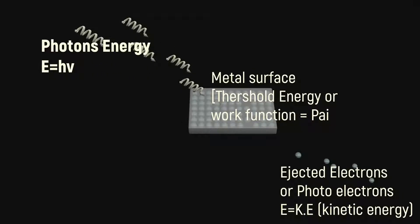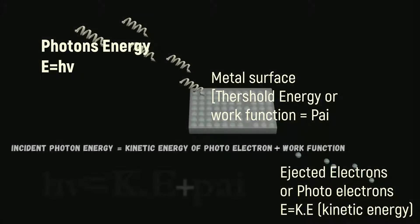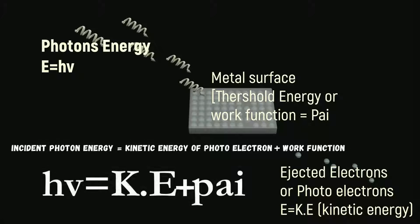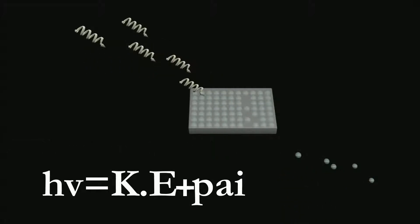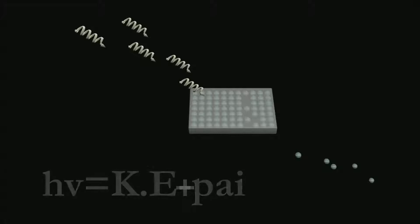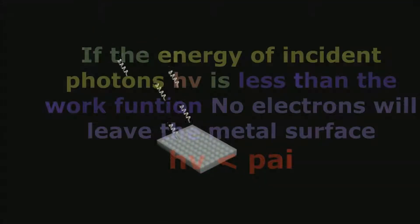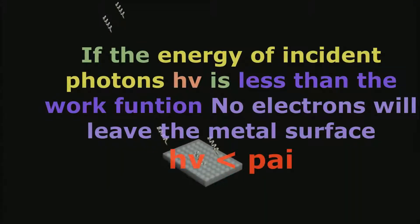Photons have energy E equal to hν. The metal surface has a threshold energy known as the work function, equal to φ. The electron gains kinetic energy from the incident photon energy, so the incident photon energy equals the kinetic energy of the photoelectron plus the work function.